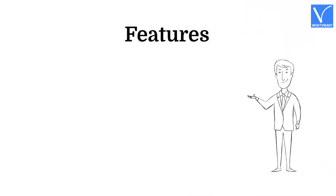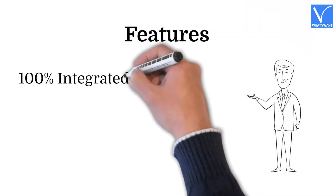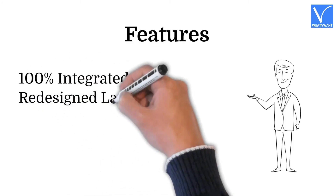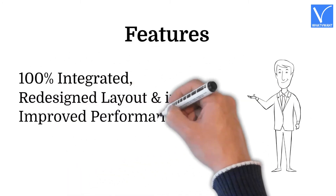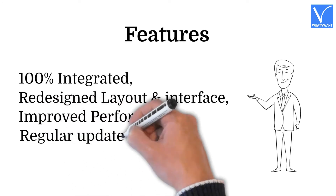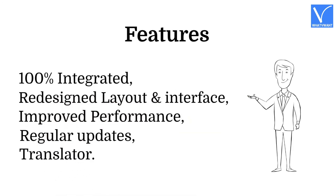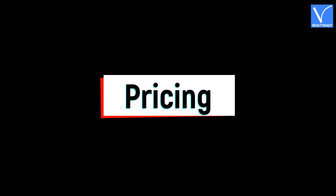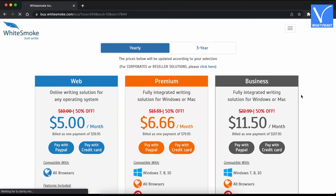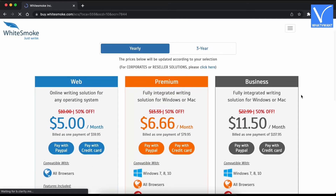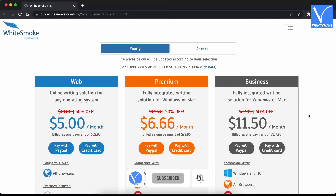Features: 100% integrated. Redesigned layout and interface. Improved performance. Regular updates. Translator. Pricing: White Smoke provides its services in three different plans — Web, Premium, and Business. All three plans can be purchased in yearly and three-year billing.